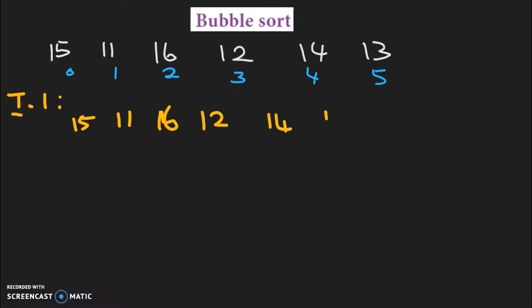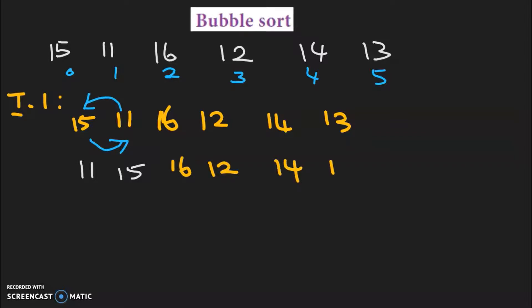In the first iteration, we compare 15 and 11. The order is not correct, so we need to do an exchange. So 11 will go to the first place. After exchange, 11 and 15 — there is an exchange. That is the first comparison and exchange.